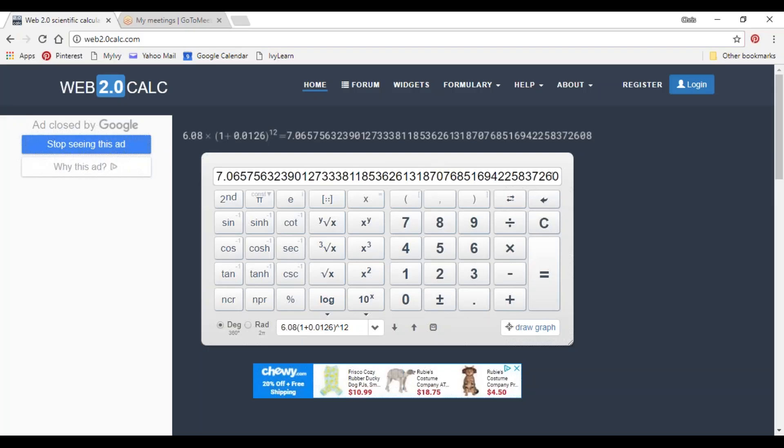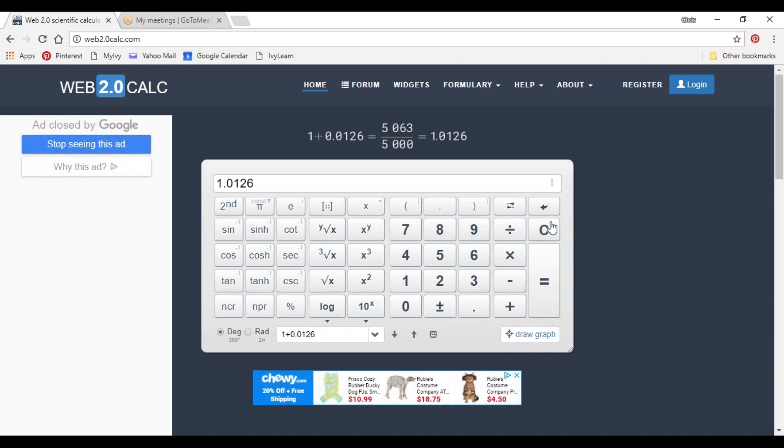If you have an older calculator that doesn't have the multi-view feature, you might need to enter this more stepwise, taking into account the orders of operations. You would do the arithmetic inside the parentheses first, hit enter and get a value. Then you would raise that to your exponent, raise to the power of 12, hit enter again, and then multiply that by 6.08. There it is, our same answer.